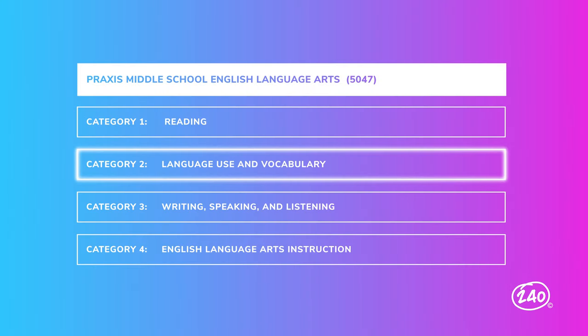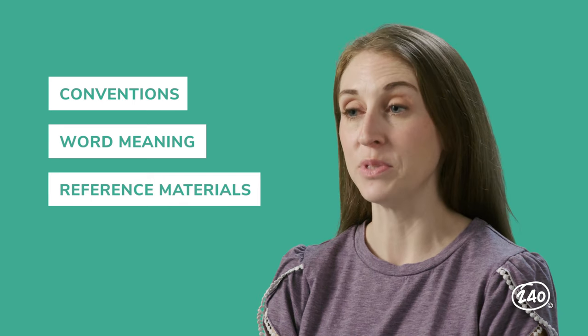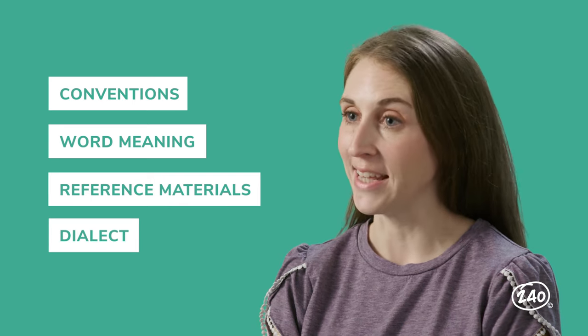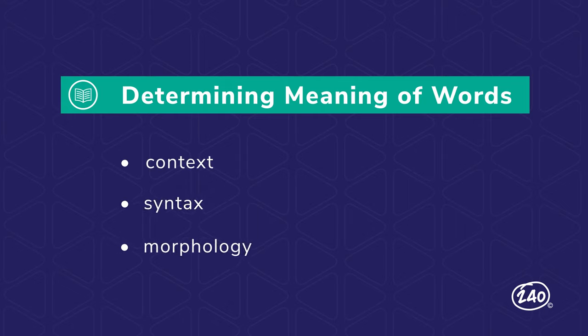Category two is all about language use and vocabulary. Expect to see questions about standard English conventions, determining word meaning, the use of print and digital reference materials, and variations in diction and dialect. We have all of this covered in the study guide, but right now let's really dig into determining the meaning of words. There are several strategies to use to determine the meaning of an unfamiliar word, such as using context, syntax, or morphology.